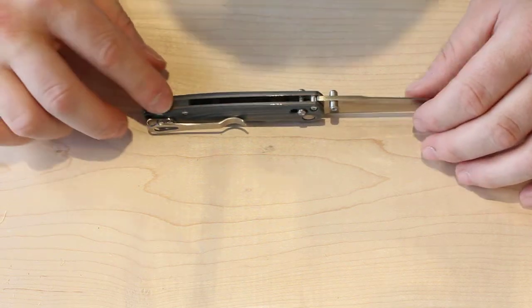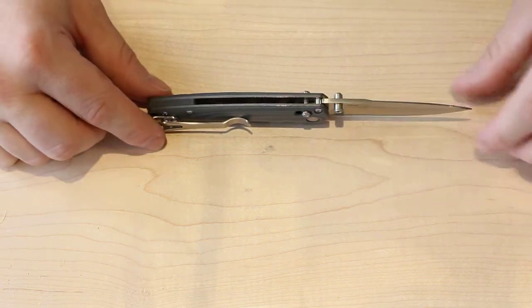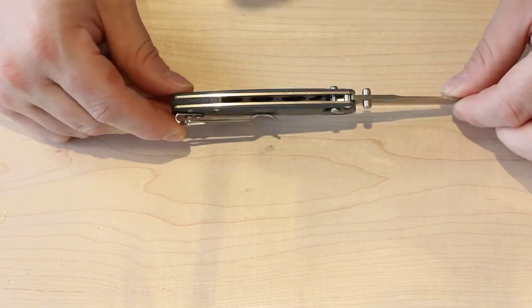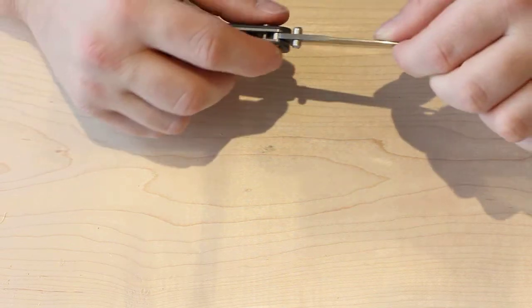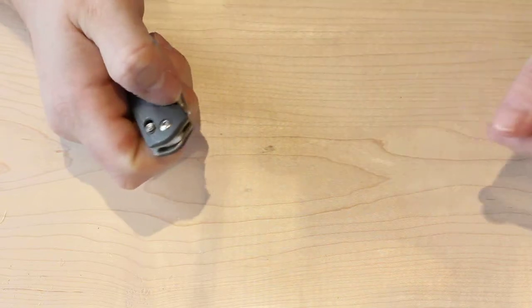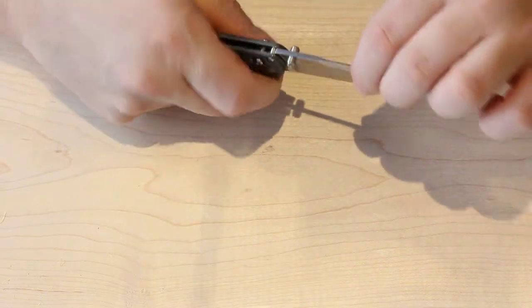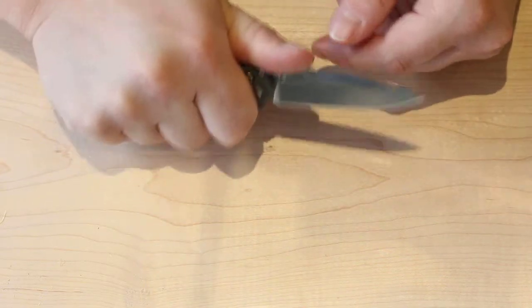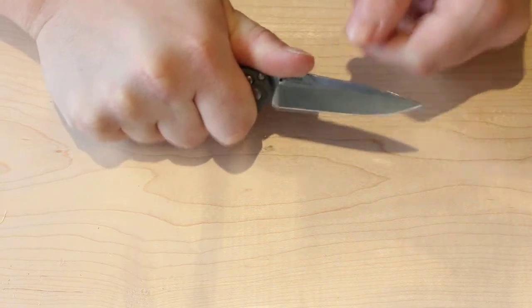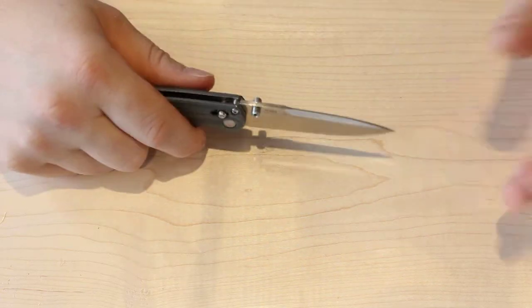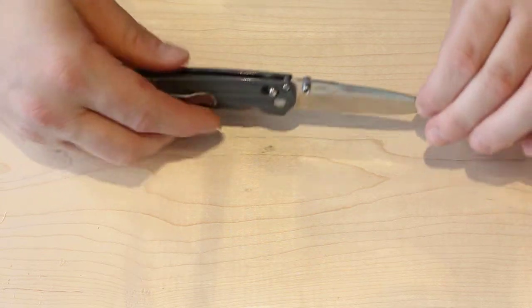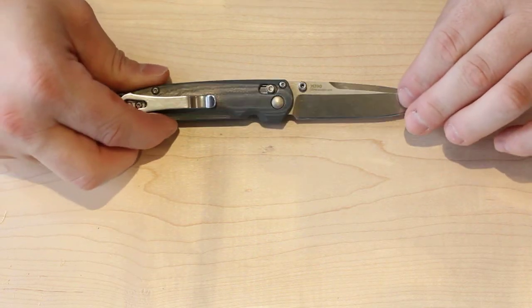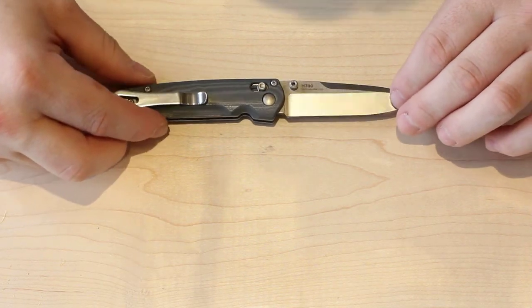On the back end of the knife, you have a G10 backspacer with a slight texture. That aids in opening and closing the knife via the axis lock, and it also gives you a little bit more grip when you're bearing down on heavy cuts. Benchmade lists this as a gentleman's knife that can handle slightly heavy use, and that's exactly how I would classify it myself.